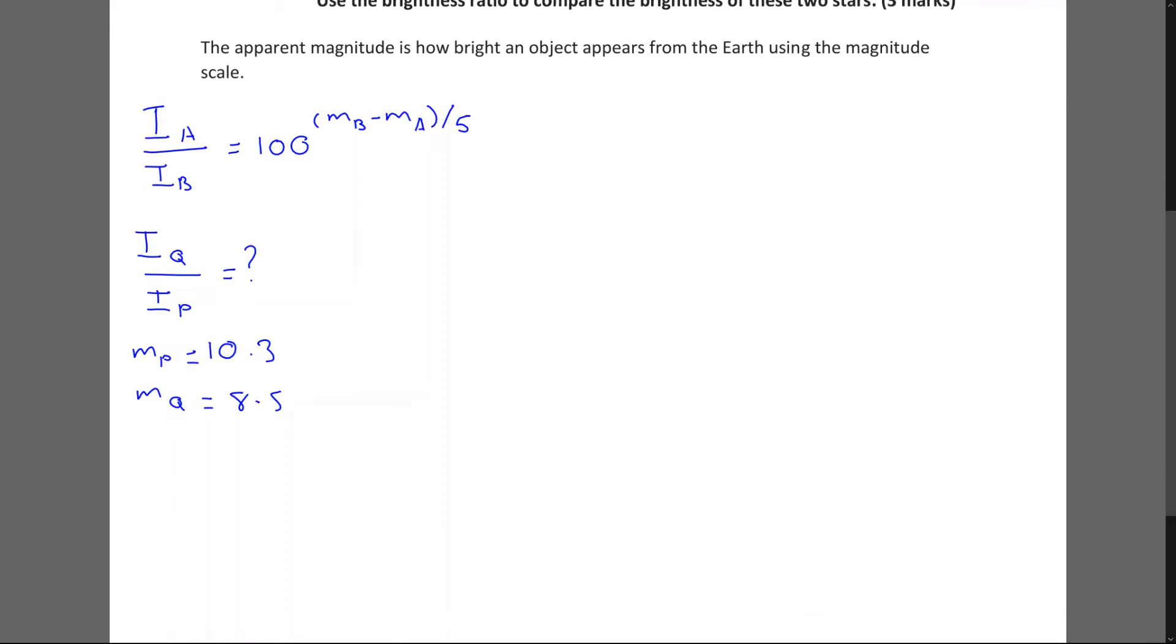Now if I sub this into my equation, I can say that IQ over IP equals 100 to the power of 10.3 minus 8.5 divided by 5. And if I plug that into my calculator, I see that's 100 to the power of 0.36, which equals 5.25, if you plug that into the calculator as well.